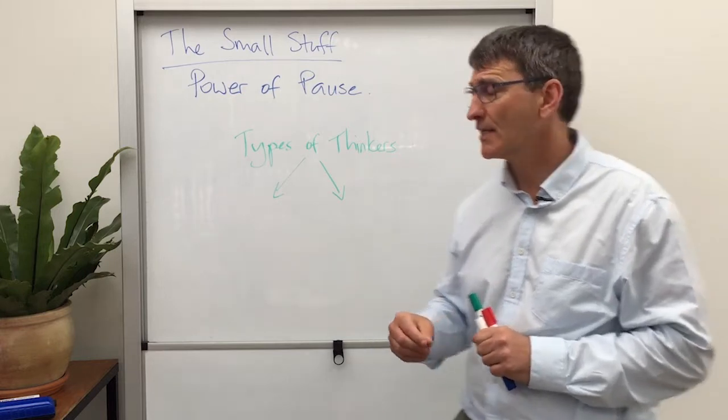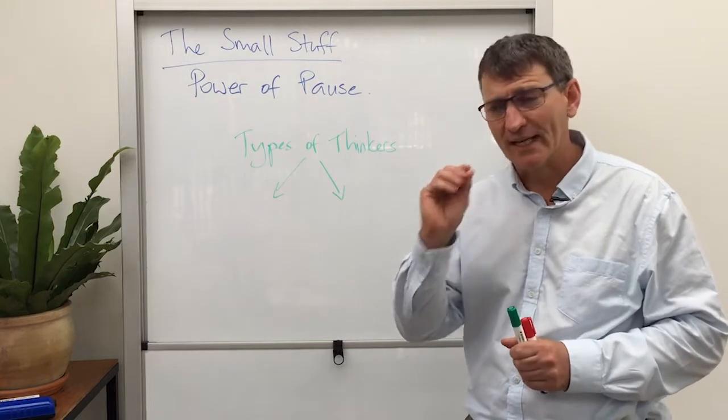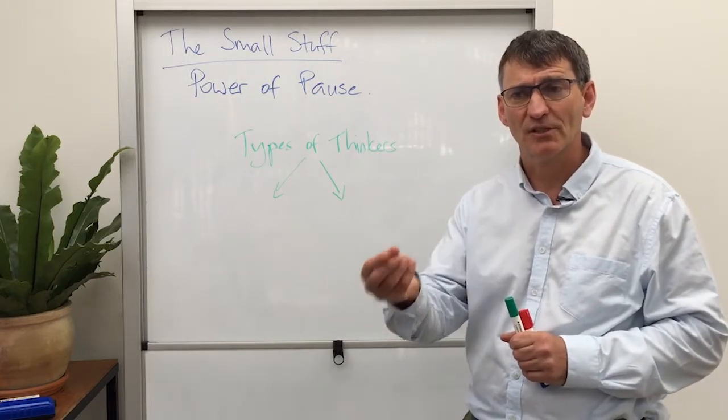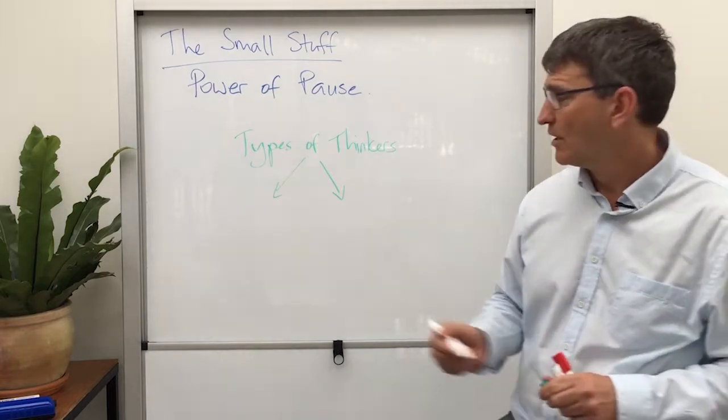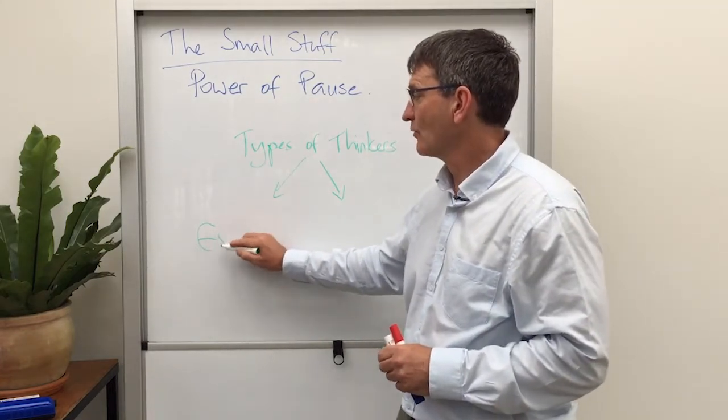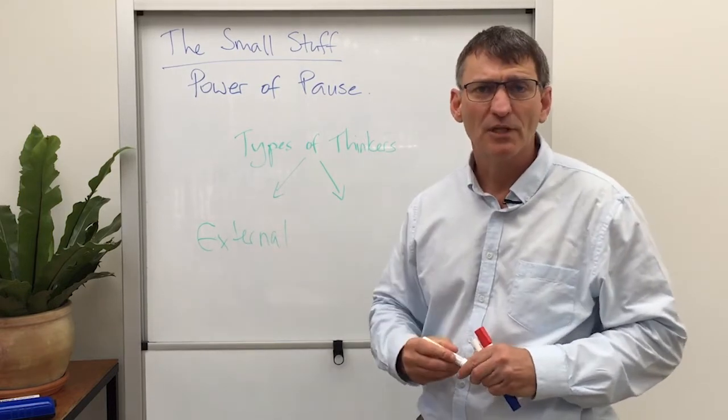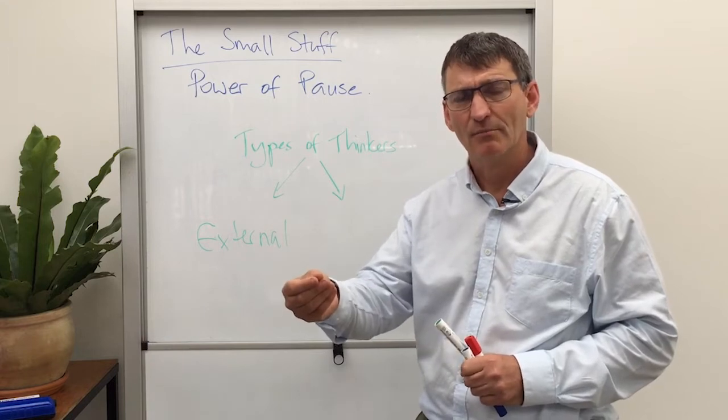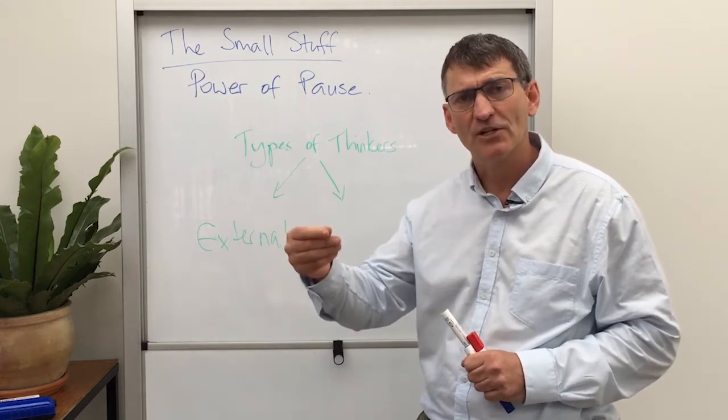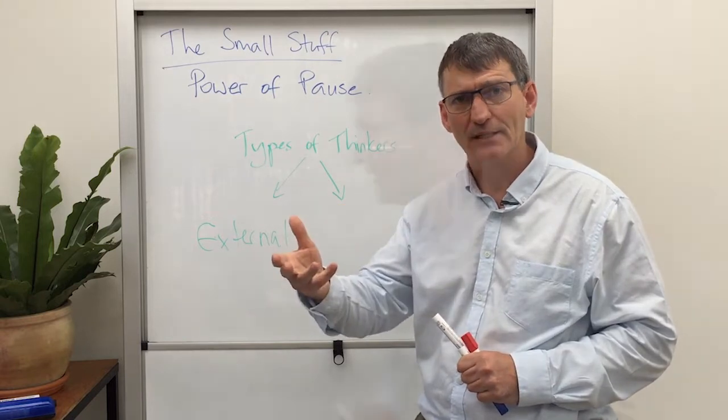Something else to consider is that there are two types of thinkers. There are the ones we count on when we ask a question and want the right answer. These are external thinkers—people who don't take long thinking before they start talking because they process information by speaking.